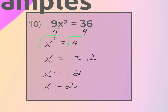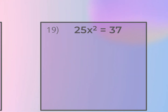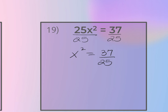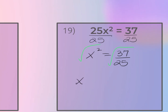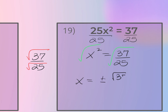For number nineteen, divide both sides by 25: x² = 37/25. Square root both sides — you can square root the numerator and denominator separately. √37 stays as is, and √25 = 5. So x = ±√37/5.